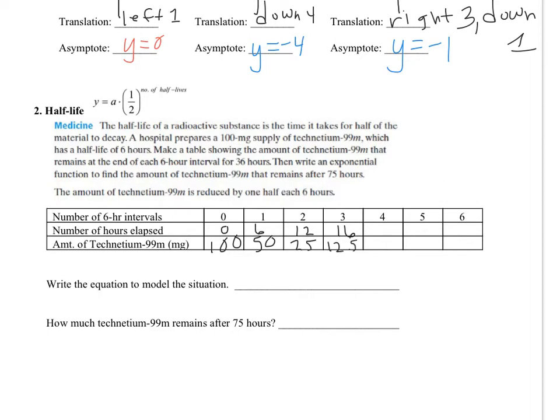So write an equation to model the situation. It's going to be y equals a, which is your initial amount. So my initial amount is going to be 100 times a half, and then I have to figure out number of half-lives. So to figure out my half-lives, I took the number of hours and divided it by 6. So 6 divided by 6 was 1, 12 divided by 6 was 2, 18 divided by 6 is 3. So my half-lives is the number of hours divided by 6.